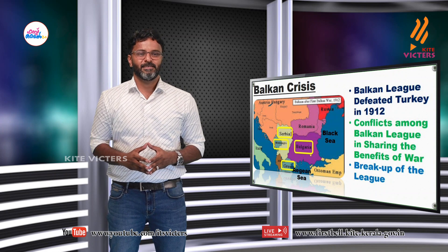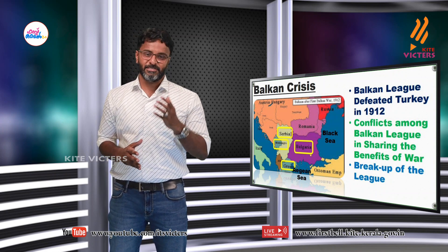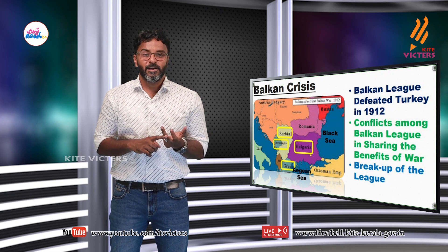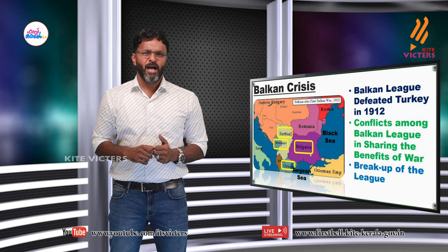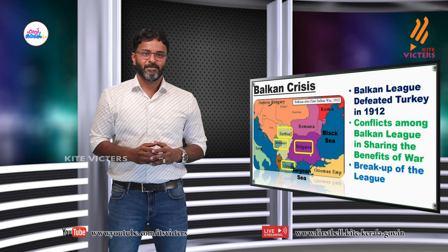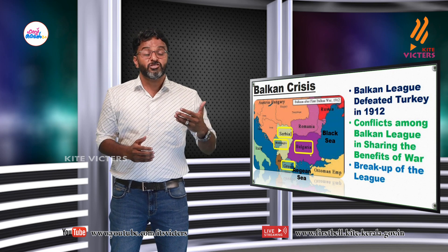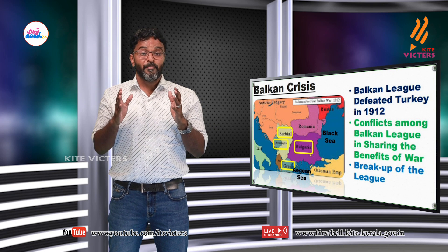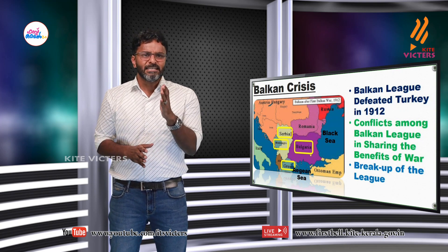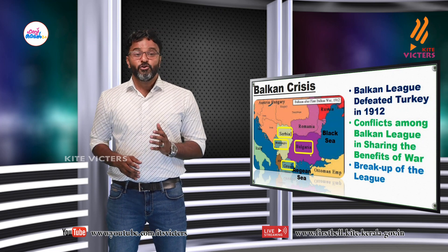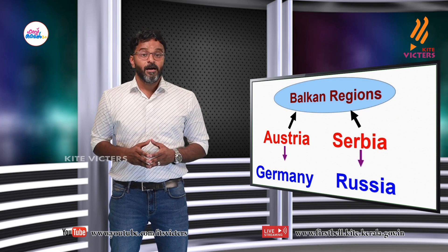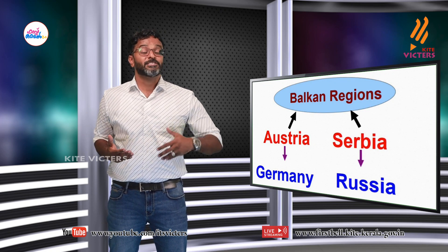The second crisis was the Balkan crisis, involving Greece, Bulgaria, Serbia and Montenegro. The Balkans were part of the Ottoman Empire. When the Balkan League defeated Turkey in 1912, conflict among the allied nations over sharing the benefits of war led to the breakup of this League and resulted in wars among them. Austria climbed over the Balkan region with the support of Germany, while Serbia backed the region with the support of Russia.